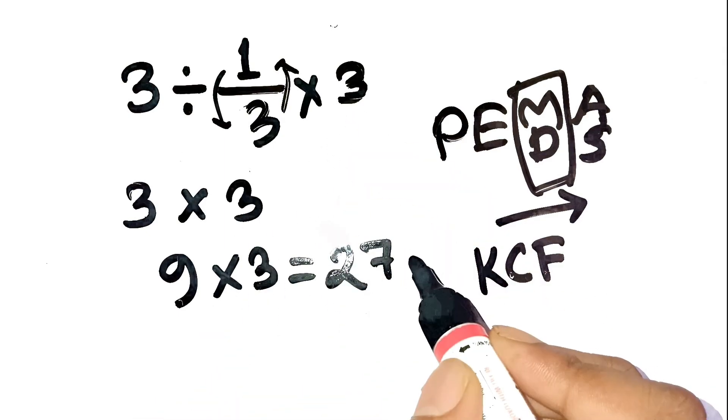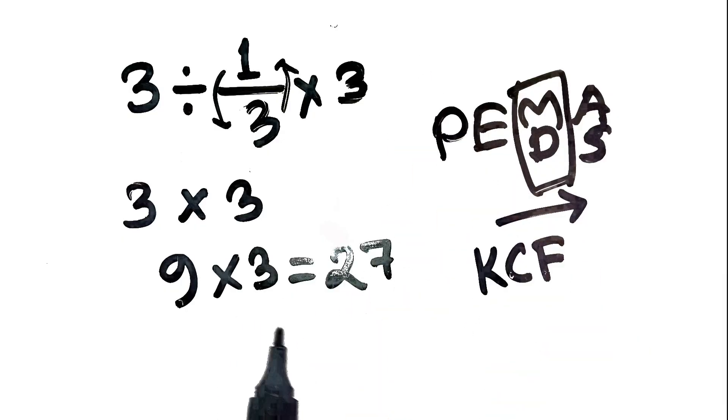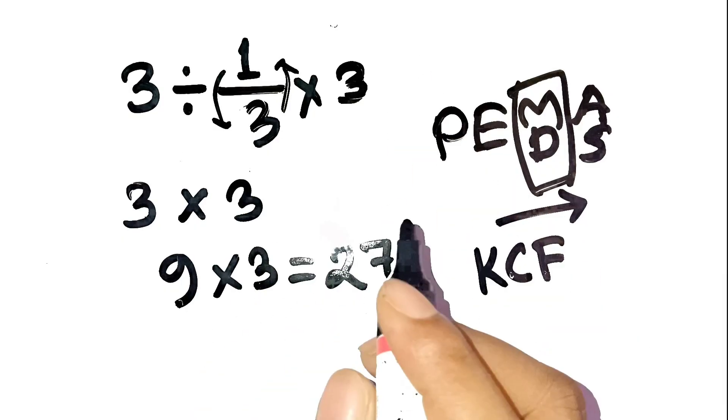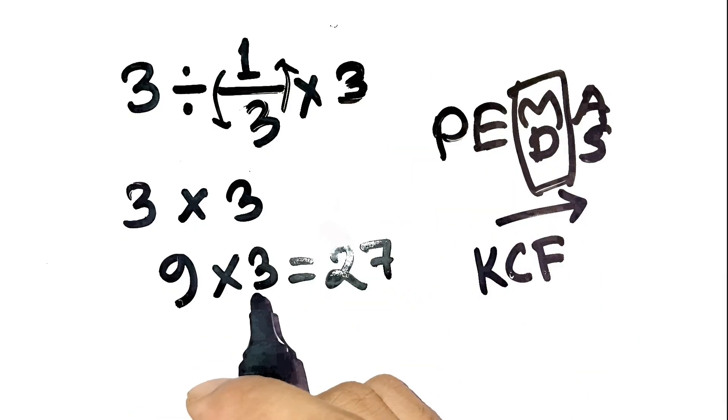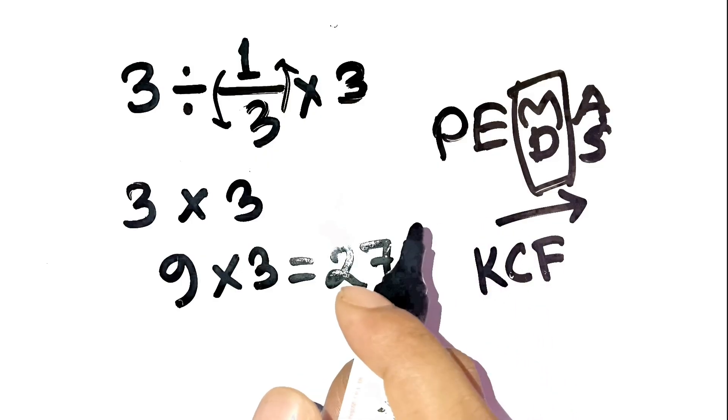So the correct answer is 27, not three. Crazy, right? Just flipping that one fraction completely changes the result. This is exactly why understanding division with fractions is so important.